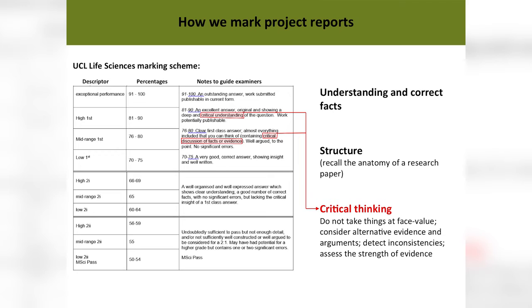Moving to the very highest grades — what are we really looking for to assign a first class degree? The key thing here is critical understanding, critical discussion of facts or evidence. This is the key: critical thinking. This is what can make a research paper, or a paper you're writing as part of your degree, truly at the upper bounds as a first class answer.